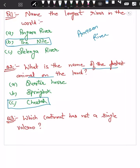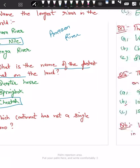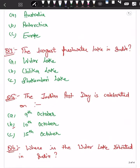Your third question is: which continent has not a single volcano? Which continent has no volcanic activity at all? Your options are Australia, Antarctica, or Europe. The answer is Australia — it is the only continent without any current volcanic activity, but it hosts one of the world's largest extinct volcanoes.